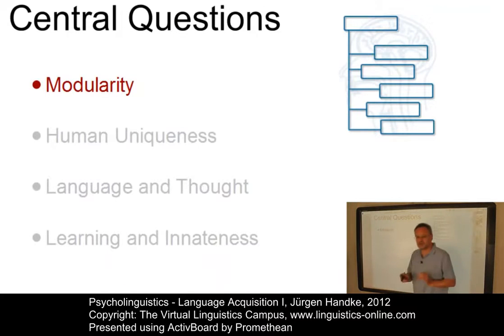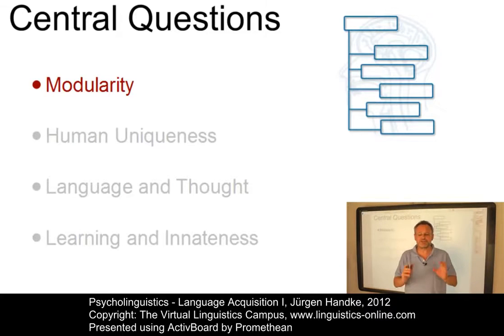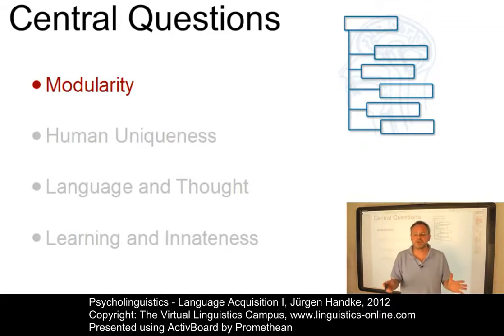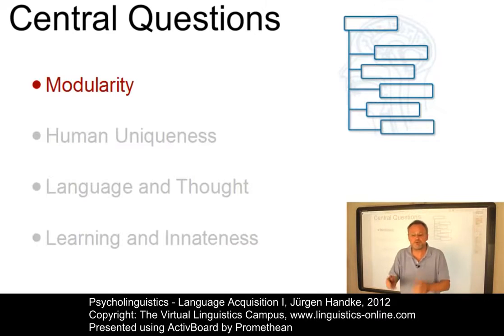One question concerns the aspect of modularity. Do children acquire language by means of a specialized cognitive device that is part of their genetic endowment? Or does language emerge from our general cognitive abilities learned through trial and error, like skills such as doing addition or riding a bike?